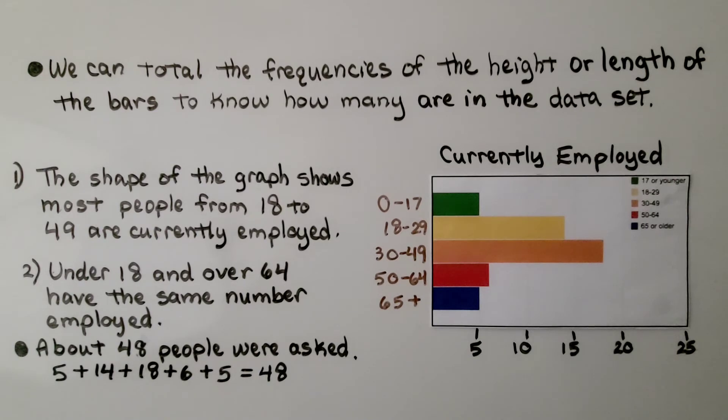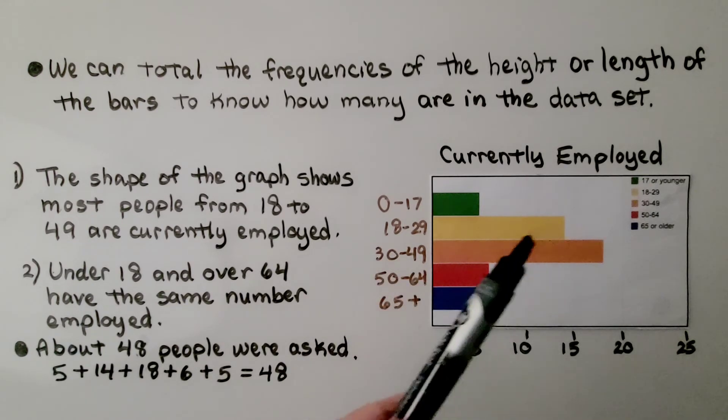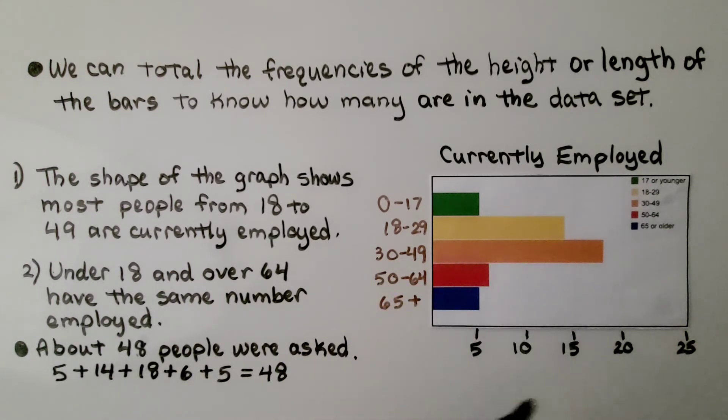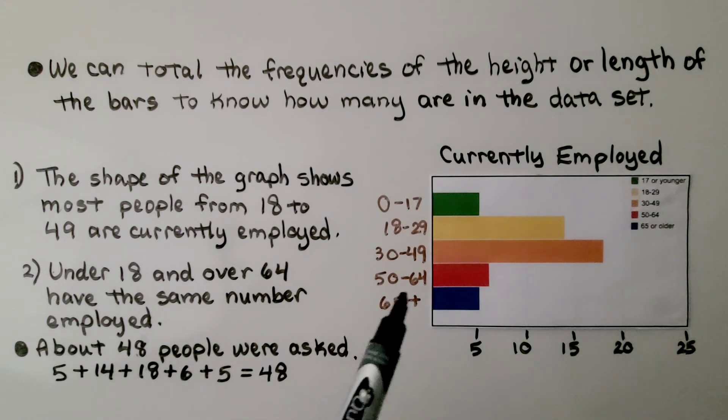We can total frequencies of the height or length of the bars to know how many are in the data set. The shape of the graph shows most people from 18 to 49 are currently employed. And under 18, 0 to 17, and over 64, the 65 plus, they have the same number employed.